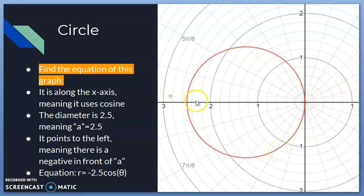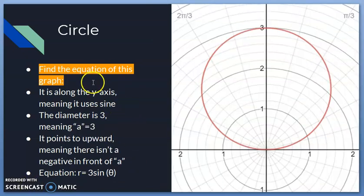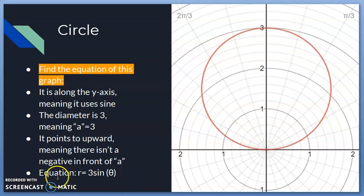Let's find the equation of a given circle graph. It's symmetrical to the x-axis, so we use cosine. It points to the left, so there's a negative in front of a. The diameter is 2.5, giving us r = −2.5·cosθ. For another example: the circle is along the y-axis, diameter is 3, and points upward (no negative), so the equation is r = 3·sinθ.